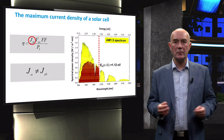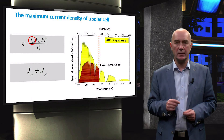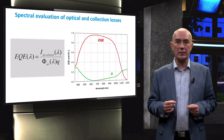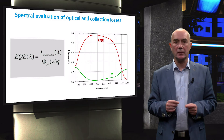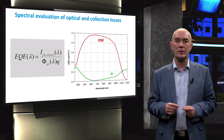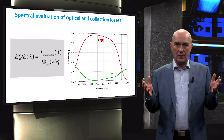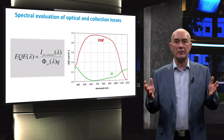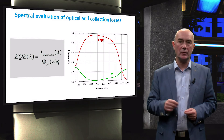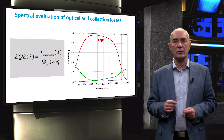So, how can we calculate the maximum practical short-circuit current density of a solar cell? For determining the maximum practical short-circuit current density, it is necessary to perform an external quantum efficiency, or EQE, measurement. EQE is a measure of the fraction of photons incident on a solar cell that actually contribute to the generation of current.